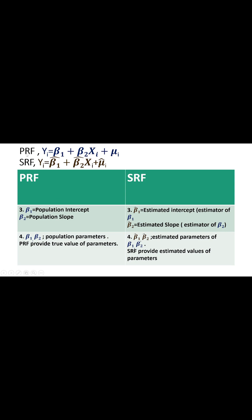In the population regression function, β1 is the population intercept and β2 is the population slope. In the sample regression function, β1-hat is the estimated intercept — the estimator of β1 — and β2-hat is the estimated slope, the estimator of β2. β1 and β2 are population parameters.